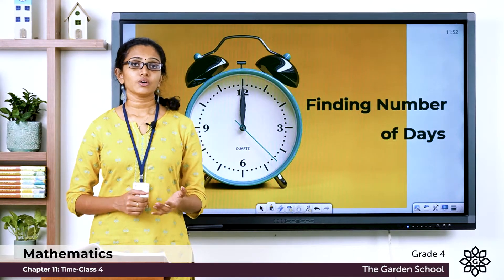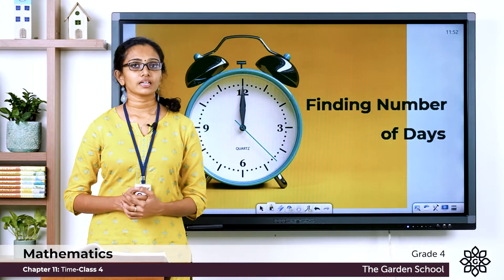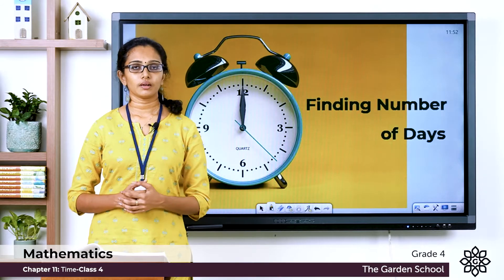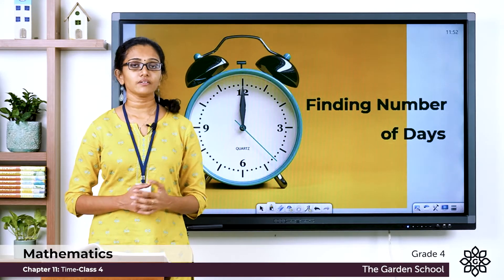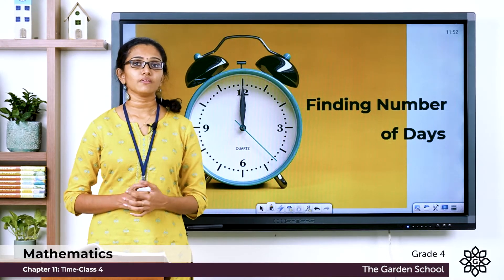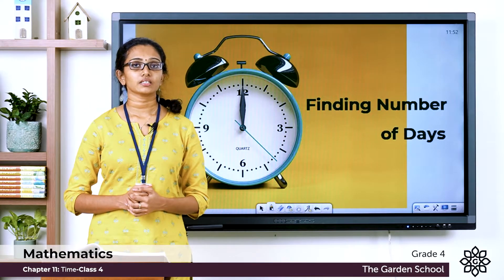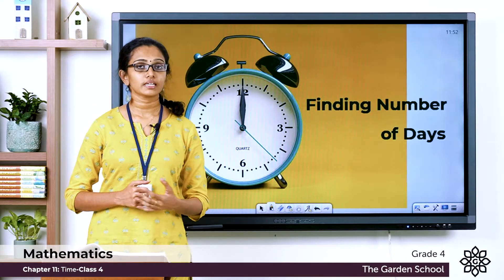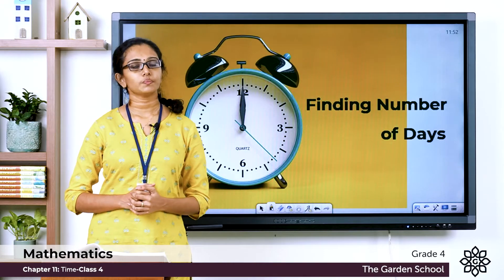We know a calendar year is divided into 12 months. Some months have 30 days, some months have 31 days, and February has only 28 days except in leap years.